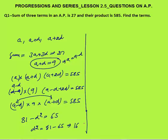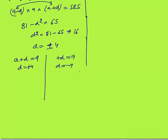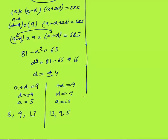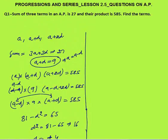We got d² = 16, so d could be either +4 or −4. When d = +4, a+d=9 gives a=5, so the terms are 5, 9, 13. When d = −4, a = 13, giving terms 13, 9, 5. Both series have sum 27 and product 585. That was a somewhat lengthy method.